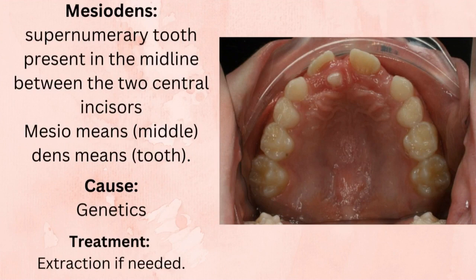Secondly, mesiodens is a supernumerary tooth present in the midline between the two central incisors. As the name suggests, 'mesio' means middle, so it is the middle tooth. Genetics plays an important role. The treatment is extraction, only if needed — if the patient is complaining of any pain, then we can easily remove it.